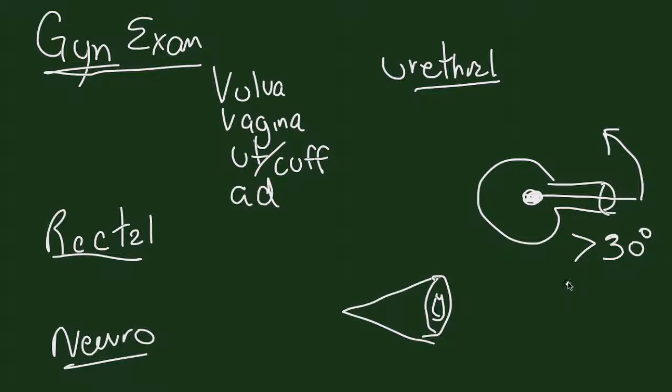probably the most common three are that of calling it mild, moderate, or severe prolapse, using the halfway system, or more commonly, the POP-Q system.